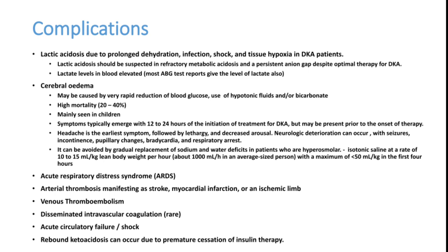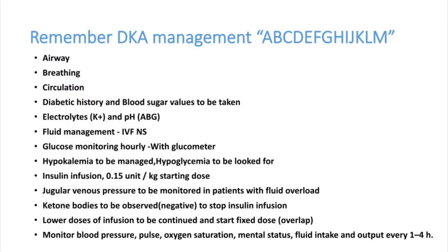DKA management summary: Airway, Breathing, Circulation should be corrected first. Take diabetic history and blood sugar values. Measure electrolytes like potassium and pH. Give fluid management as discussed. Monitor blood sugar initially hourly, then every four hours. Manage hypokalemia, manage hypoglycemia, then start insulin at 0.15 units/kg. Monitor JVP or CVP. Observe ketone bodies to guide stopping of insulin infusion.